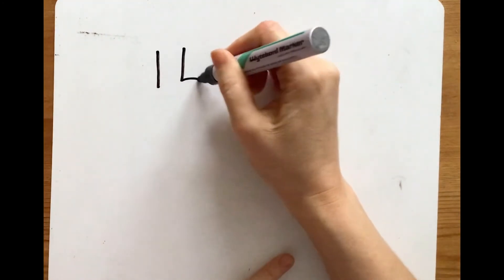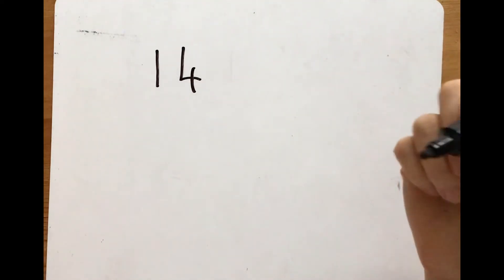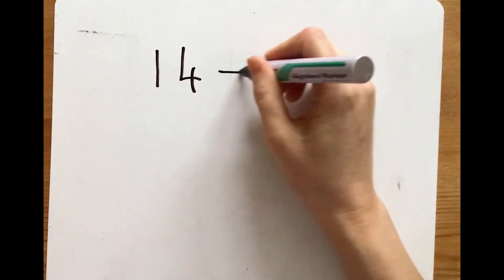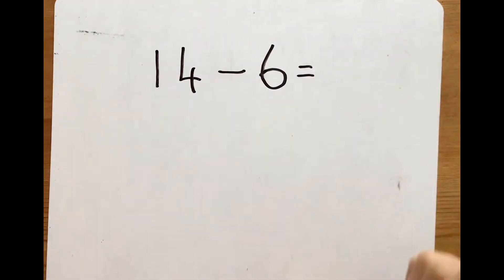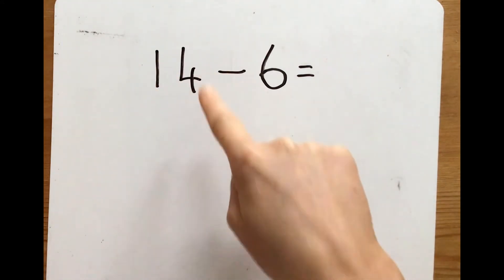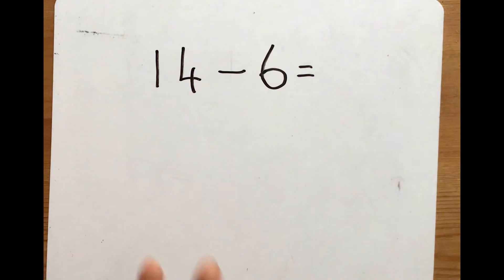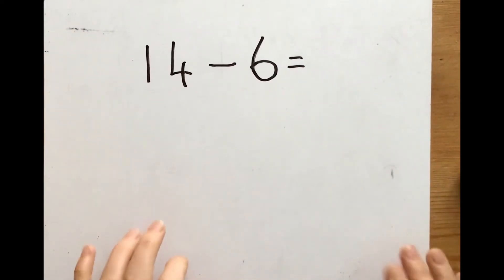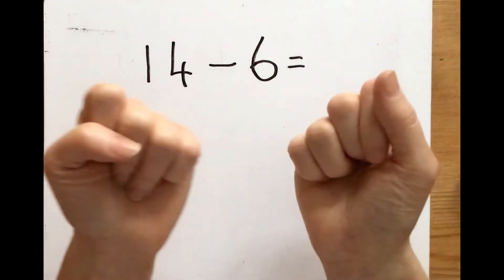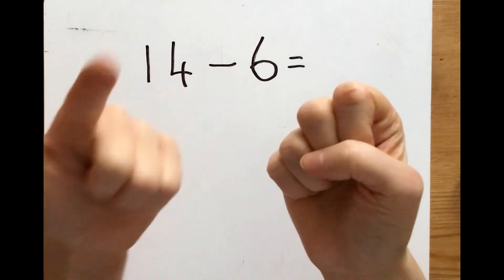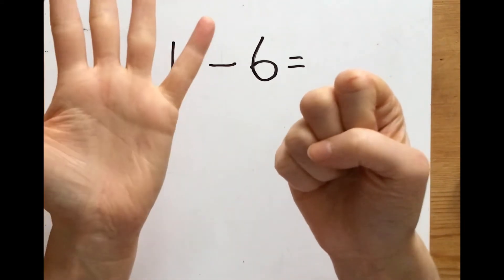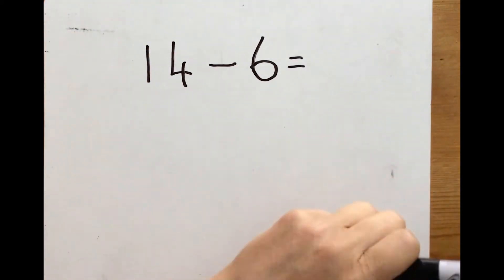Now we're going to work out the answer together. The problem said there were 14 fish in the tank, and then a girl comes and buys six fish — so she's taking six fish away. There were 14 fish and then a girl took six away. How many fish are left? I'm going to count backwards: I'll have 14 in my head and count back six. 14, 13, 12, 11, 10, 9, 8. So there are eight fish left.